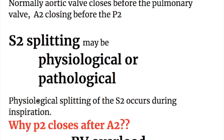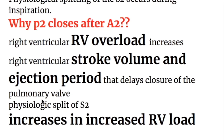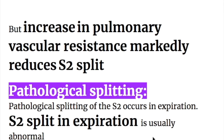Second heart sound splitting may be physiological or pathological. Physiological splitting of the second heart sound occurs during inspiration, with P2 closing after A2. Right ventricular overload increases right ventricular stroke volume and ejection period, delaying closure of the pulmonary valve so it closes after the aortic valve. Physiological split increases with RV overload but decreases when there is increased pulmonary vascular resistance.